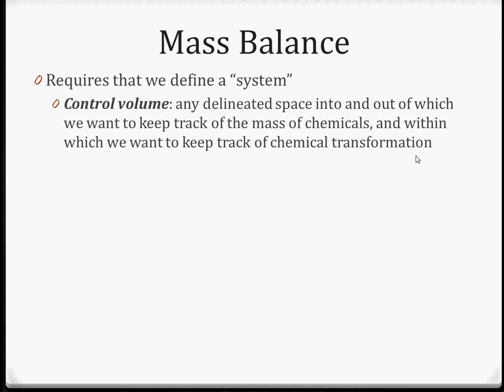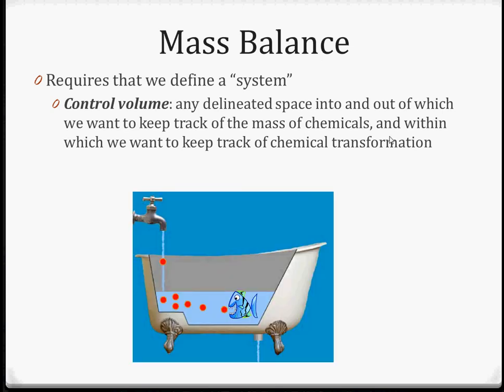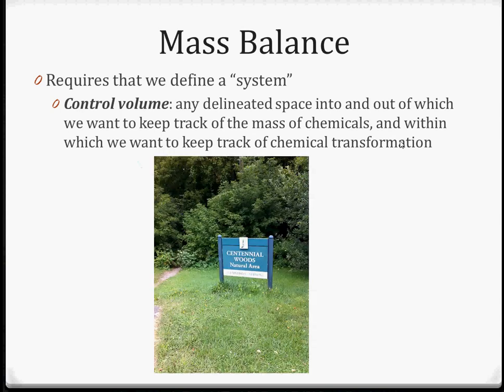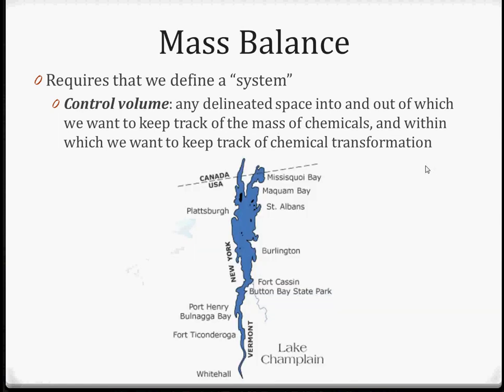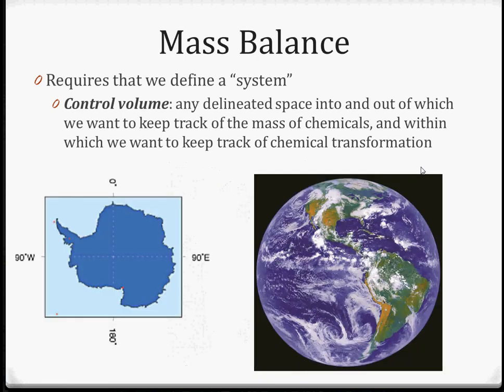Mass balance requires a unit of interest — a system, or in the terminology used here, a control volume. This is any delineated space into which or out of which we want to track the mass of chemicals, and within which we track transformations. It could be our bathtub, a retention pond, Centennial Woods, a farmer's field, Lake Champlain, the Lake Champlain Basin, the Mississippi River Basin, an entire continent, or even the entire world — for example, if you care about energy balances. It's really just delineated by what your question is and what you care about.